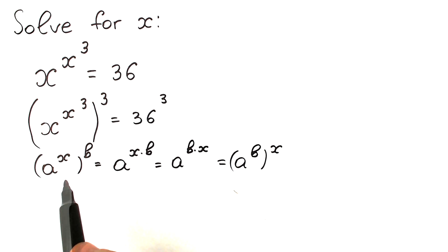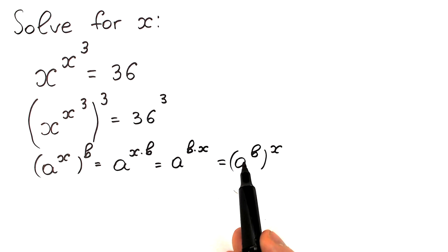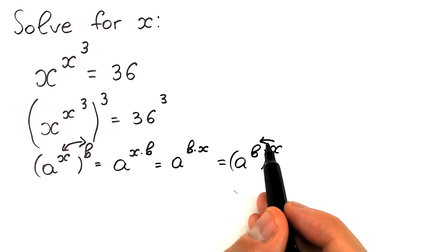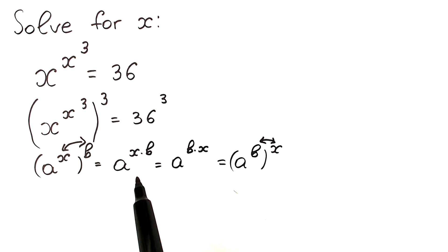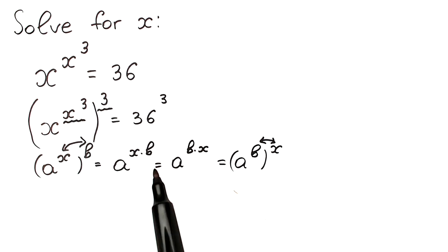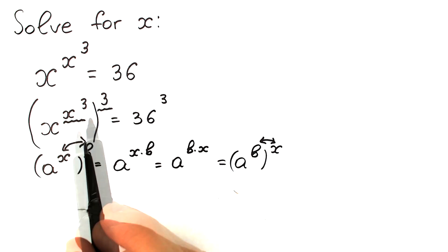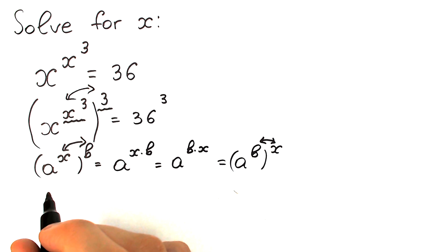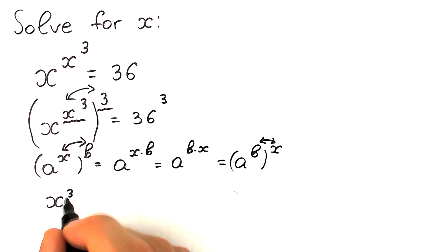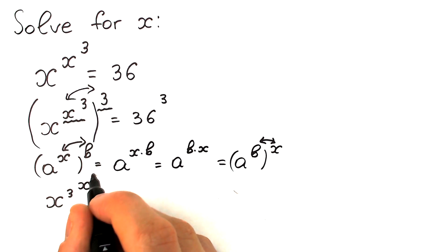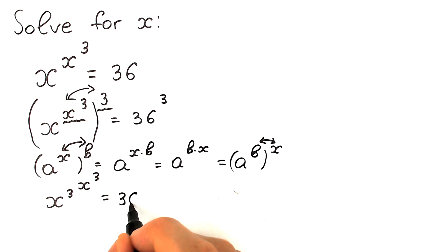If you look closely at the beginning, we have a to the power x to the power b, and over here a to the power b to the power x — so we can swap x and b. Applying this rule of interchange to our expression: we have the outer power and the inner power. The inner power is x cubed, which plays the role of b. So we swap the two powers.